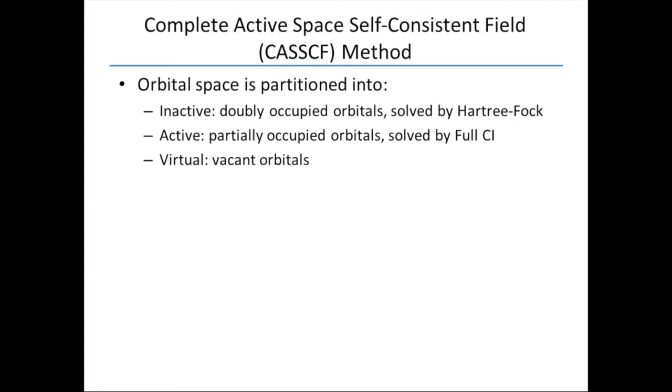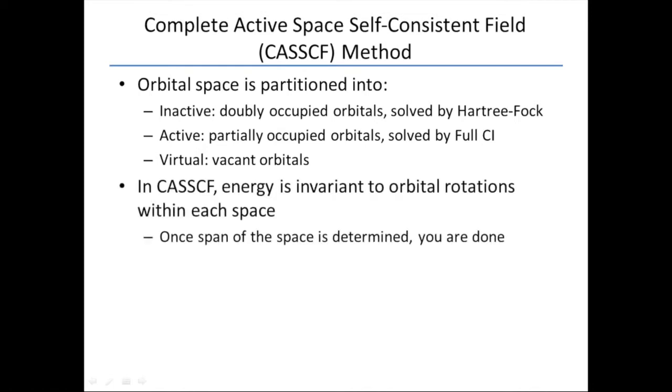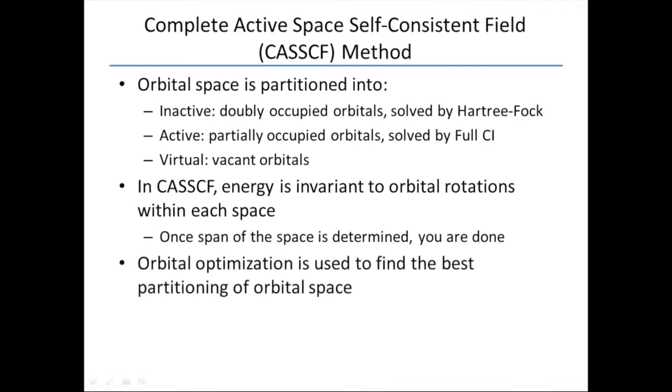Let's briefly talk about the complete active space self-consistent field method. You need to partition your orbital space into an inactive space, which can be treated by mean field, an active space, which is solved by full CI, and a virtual space with just vacant orbitals. In CASSCF, once you have defined these spaces, you're done, because you can rotate your orbitals within each space and the energy doesn't change. The whole purpose is orbital optimization to find this best partitioning of the orbital space.